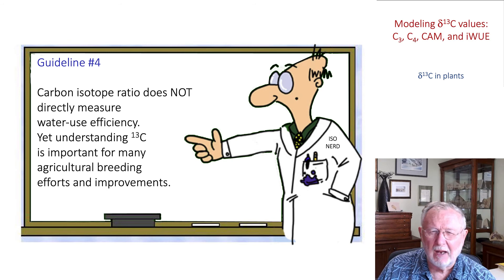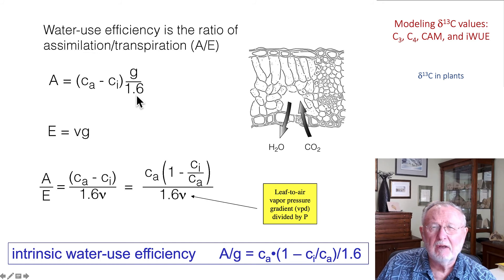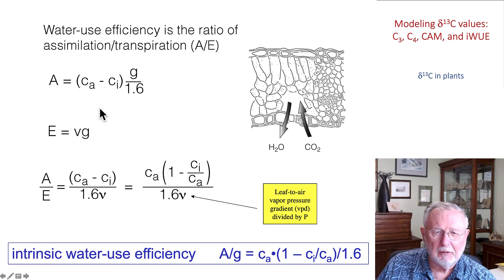Carbon isotope ratios do not directly measure water use efficiency. That's misleading. Instead, carbon isotope ratios measure what's called intrinsic water use efficiency. We can come up with this equation here to describe the flux of photosynthesis associated with the CO2 gradient, conductance of water relative to the ratio of diffusion of CO2 to water, and a similar equation for transpiration—water vapor gradient times the conductance. So water use efficiency reduces to this term here.